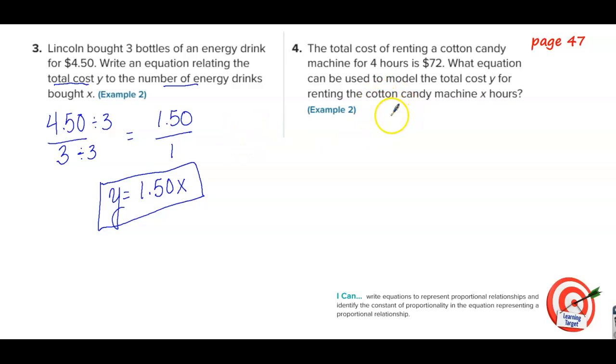Number four, the total cost of renting a cotton candy machine for four hours is $72. What equation can be used to model the total cost over the hours? So the total cost is $72 over the hours which is four. I think I know this one but I'm going to double-check it on the calculator. Yes, $72 divided by 4 is $18. 4 divided by 4 is 1. So the equation is y equals 18x, where it's $18 for one hour.